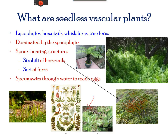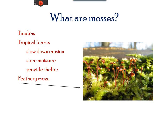The hornwort is a short blue-green gametophyte that emerges from the sporophyte. Ferns and whisk ferns are characterized by larger leaves and branching roots. Mosses usually inhabit tundras and tropical forest. They prevent soil erosion, store moisture, and provide shelter to small animals. Here is an example of a feathery moss.